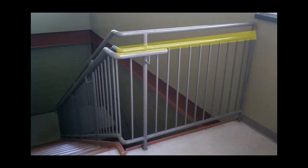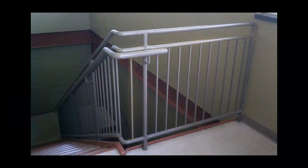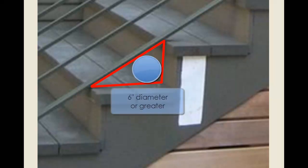Intermediate rails or balusters must be spaced to prevent passage of a sphere 4 inches or more in diameter. And the triangular space that is created between the tread, riser, and the bottom of the rail must not allow passage of a 6 inch diameter sphere.